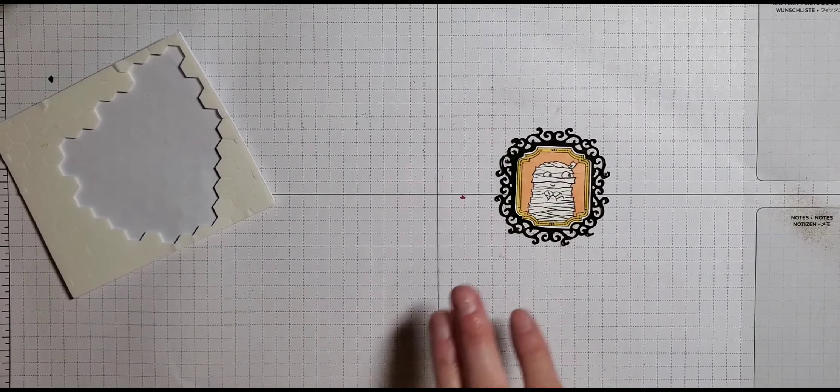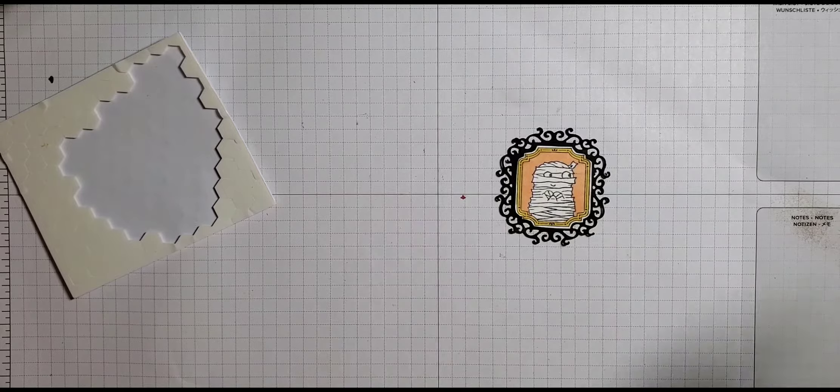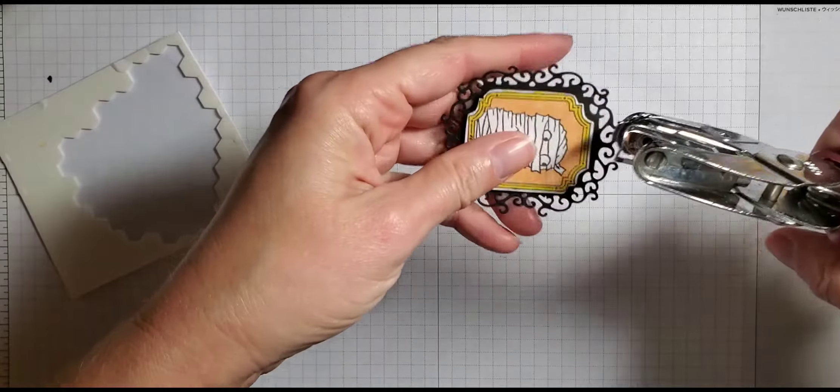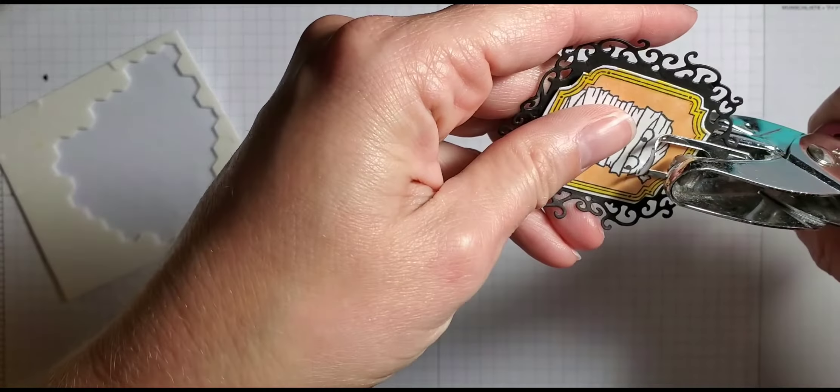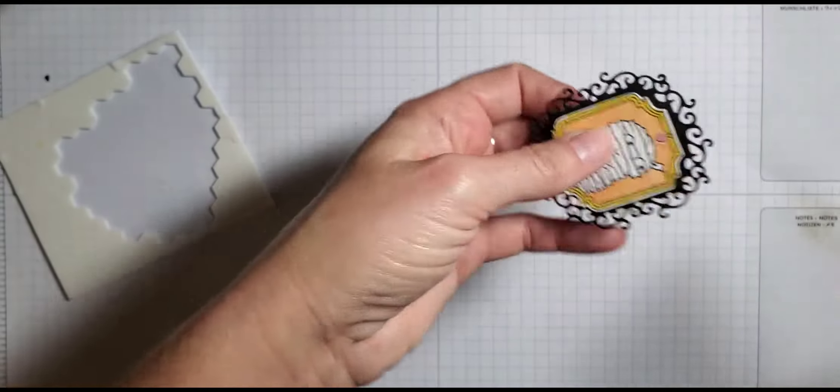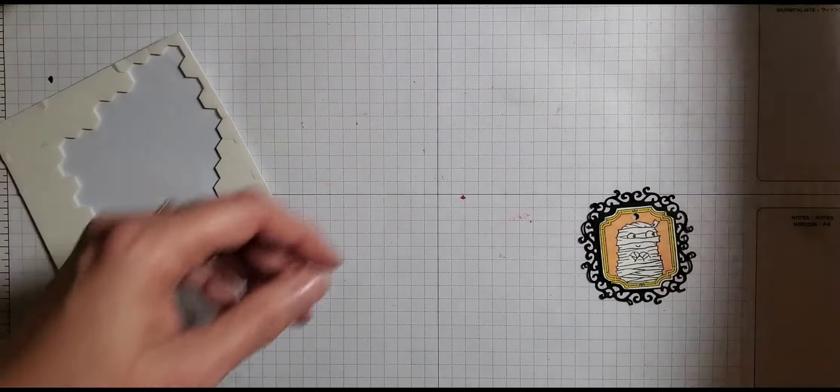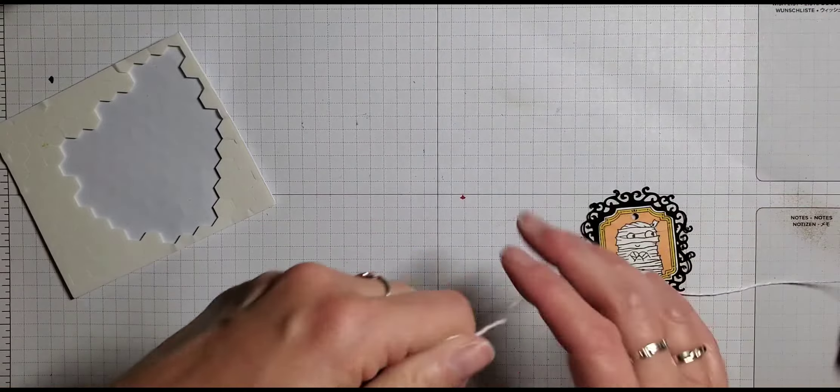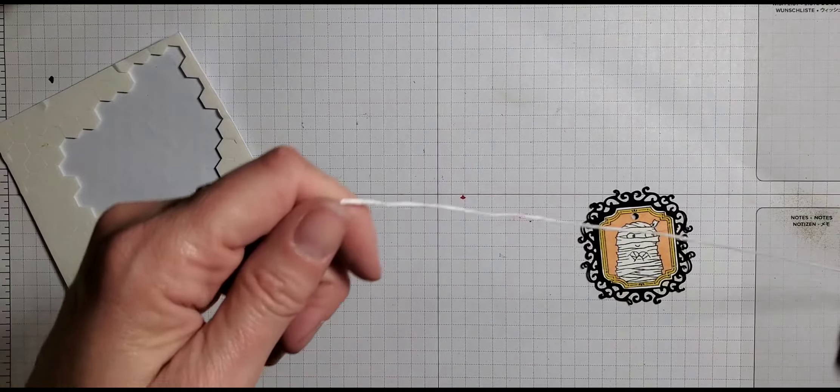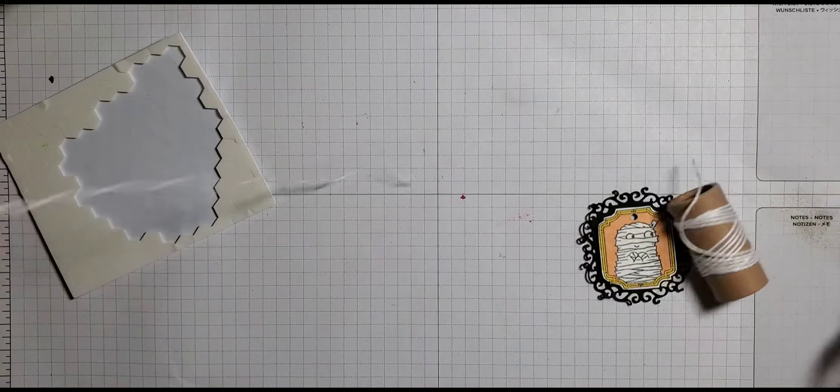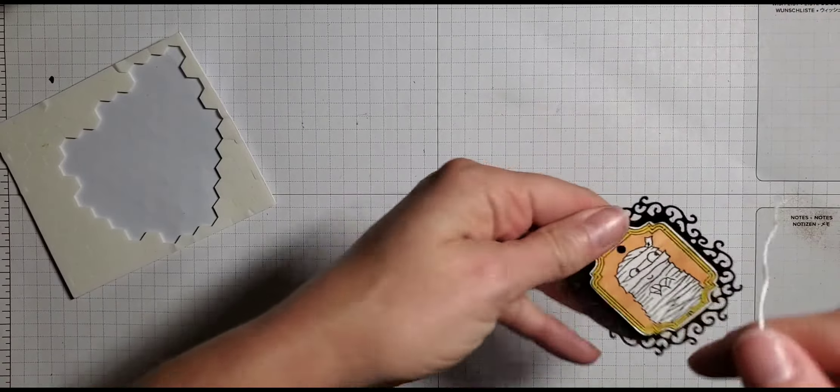And I'm going to use my hole punch, and I'm going to punch a hole straight through both, right above his head. And then I'll take some whisper white twine, baker's twine here, and I'm going to thread that through here.